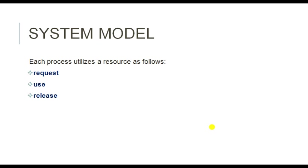Sometimes one process requests a resource, and at that time another process may also come and start requesting the same resource. Once the request is granted, the resource is allocated to the particular process, then the process uses the resource. Finally, after completion of the work, the process releases the resource. This is the normal system model.